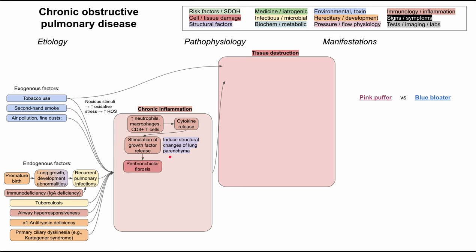One type of structural change induced is peribronchiolar fibrosis, which results in narrowing of the airway and obliteration of some of the airspaces. This obliteration of the airspaces is the definition of emphysema, one of the classic terms associated with COPD. We used to consider emphysema its own disease, but we've now lumped emphysema and chronic bronchitis under the diagnosis of chronic obstructive pulmonary disease.